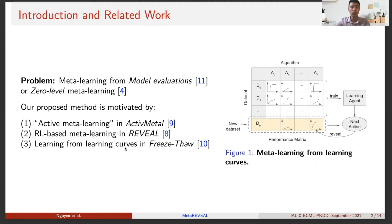Let's see the limitations of these methods in an example. In Figure 1, we show a setting of meta-learning with algorithms in columns, datasets in rows, and learning curves of algorithms on the datasets. Given a new dataset, the goal is to find the best performing algorithm as fast as possible. Previous work such as ActiveMeta performs multiple matrix factorizations using the entire performance matrix, which is computationally demanding.